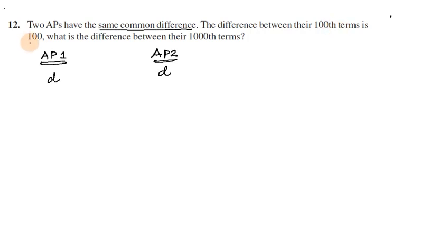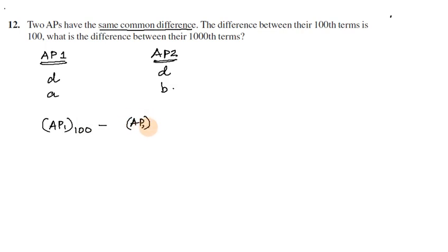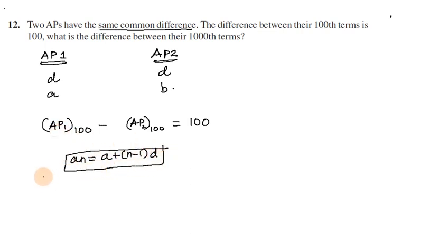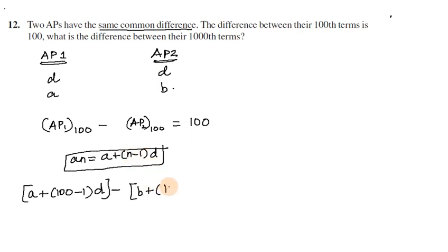The difference between their 100th terms is 100. Let the first term of AP 1 be A and the first term of AP 2 be B. For AP 1, the 100th term is A plus (100 minus 1) times D. For AP 2, the 100th term is B plus (100 minus 1) times D.